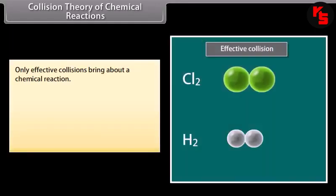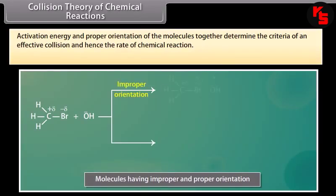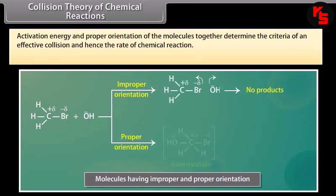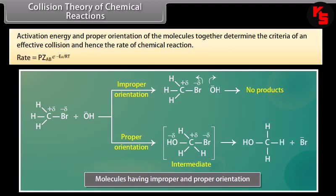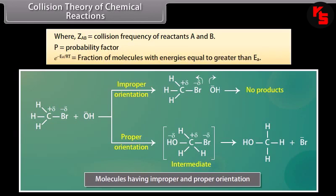Only effective collisions bring about a chemical reaction. Effective collisions are those in which molecules collide with sufficient kinetic energy and proper orientation to facilitate breaking of bonds between reacting species and formation of new bonds. Activation energy and proper orientation together determine the criteria of an effective collision and hence the rate of chemical reaction. Rate = P·Z_AB·e^(−Ea/RT), where Z_AB is the collision frequency of A and B, P is the probability factor, and e^(−Ea/RT) is the fraction of molecules with energies equal to or greater than Ea.